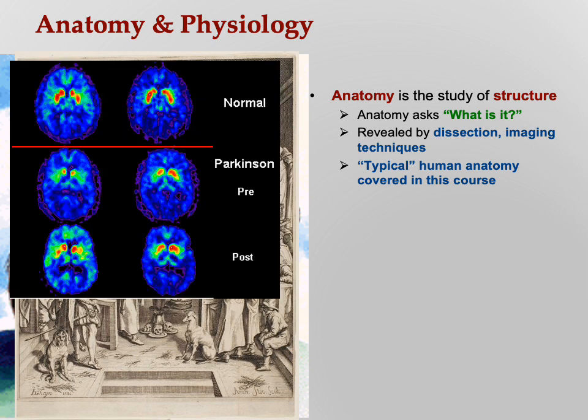This is a more contemporary imaging technique. I usually ask in class if anybody knows what this is, and most people usually get it wrong. This is a PET scan — positron emission tomography — which uses radioactive glucose. The parts of the brain that are more active will light up brighter.